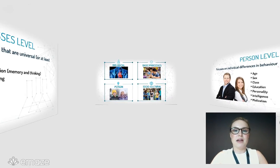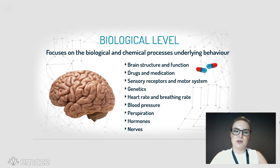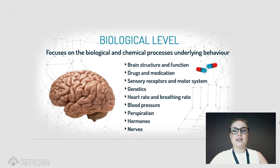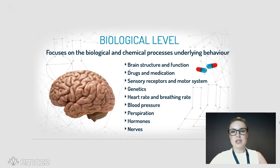Let's take a look at the biological level of explanation first. This really focuses on the biological and chemical processes that might underlie behaviour — things like brain structure and function, drugs and medication, heart rate, blood pressure, and hormonal factors. Anything biological or chemical that could be impacting that behaviour.